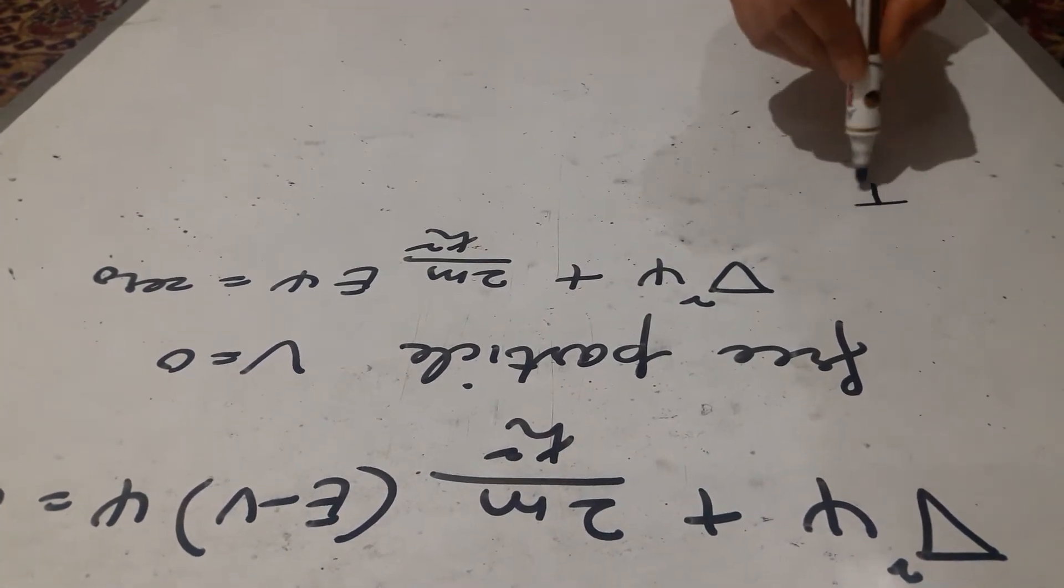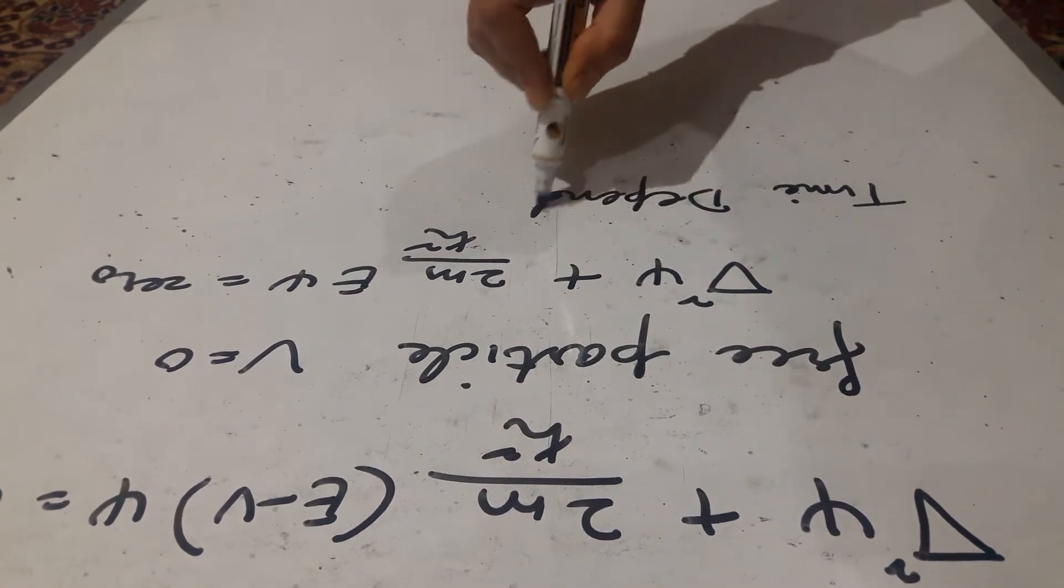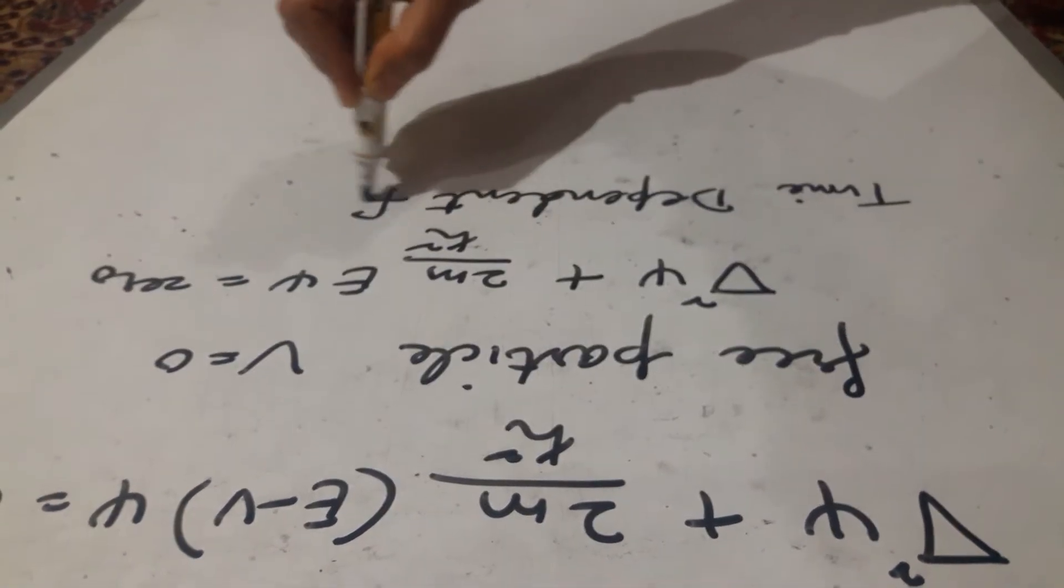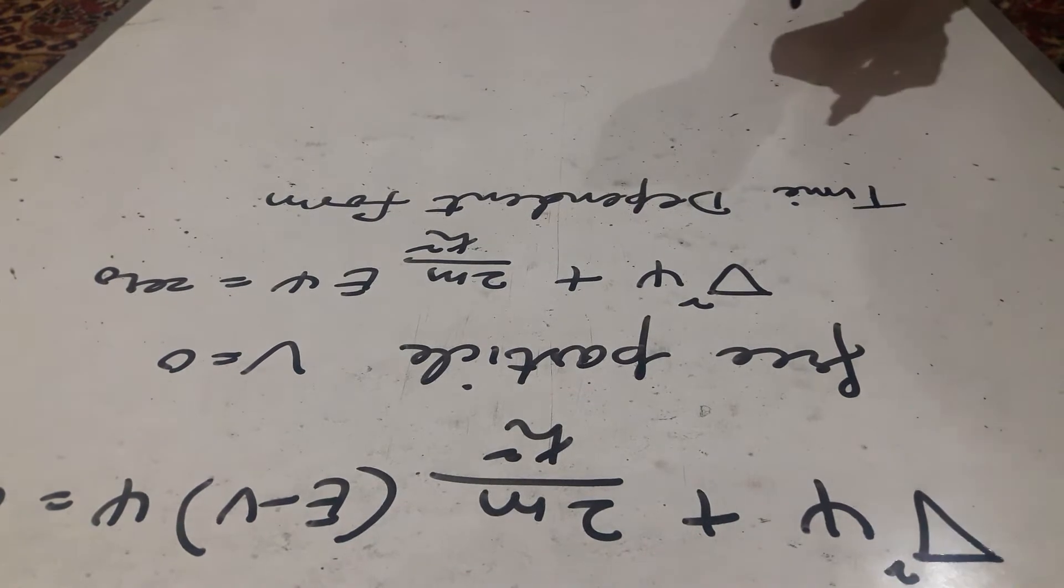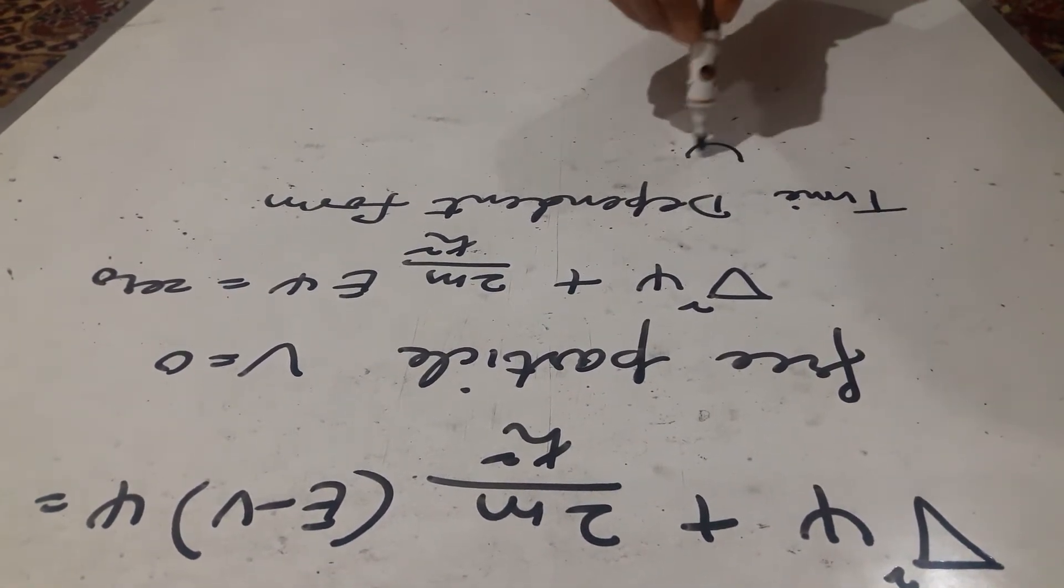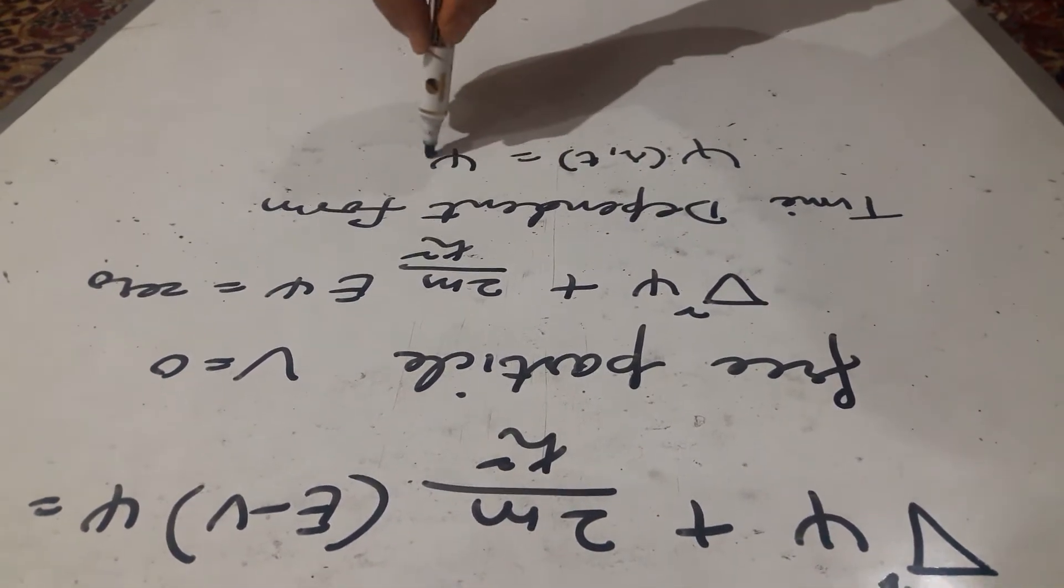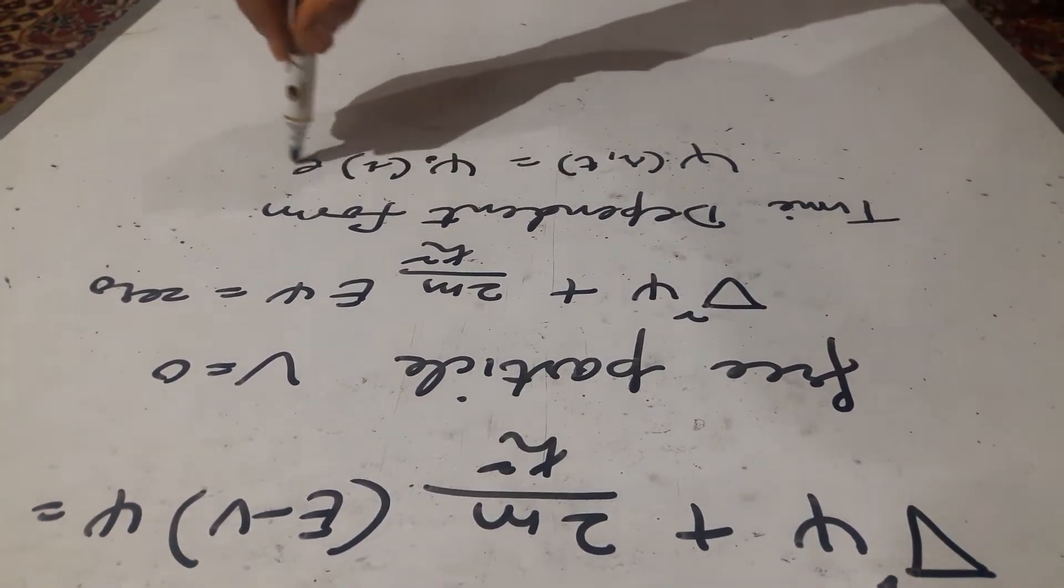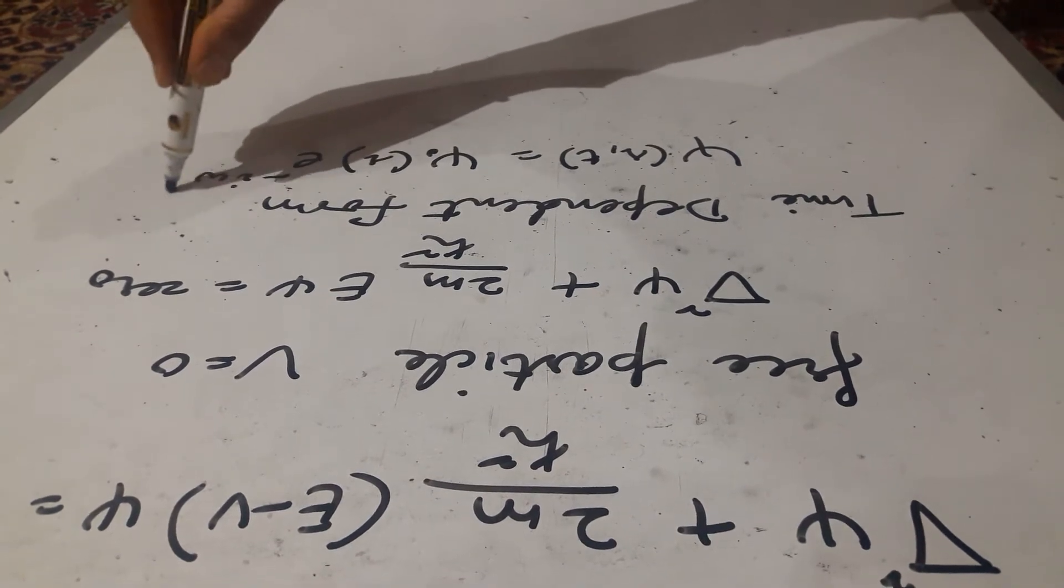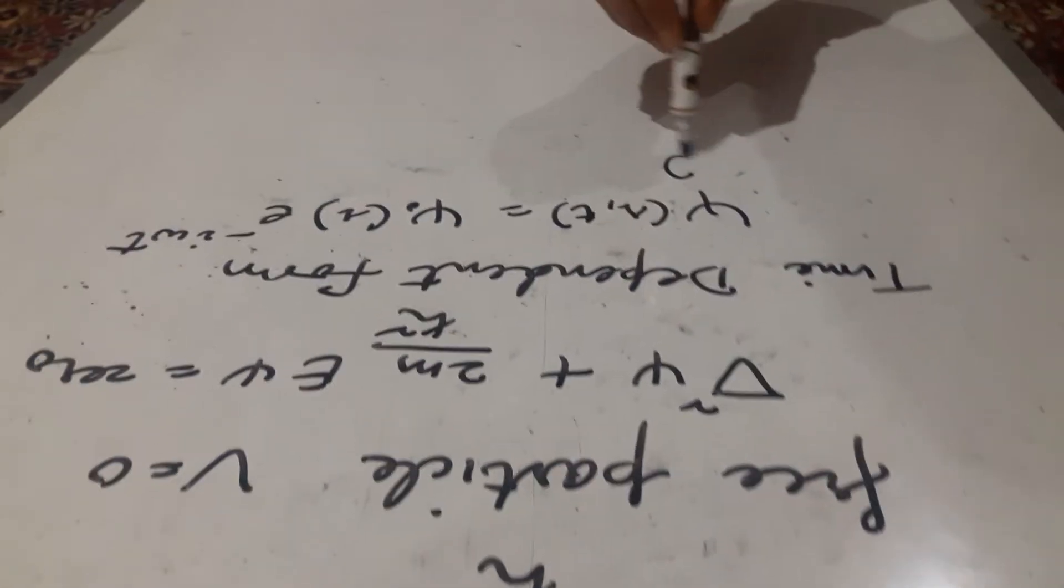Now we will come to the time dependent form of Schrödinger equation. Again, we will begin with the wave function: psi of r t is equal to psi 0 of r e to the power minus iota omega t. Let us differentiate it once with respect to time.